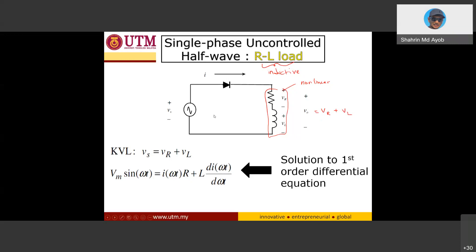We analyze this circuit during the on state only. During the on state, current flows and we apply KVL: V_s equals V_R plus V_L. Rewriting V_R in terms of i and R gives i(ωt)·R, and the voltage drop across the inductor is L·di/dt. This results in a non-linear first-order differential equation, which is quite difficult to solve directly.